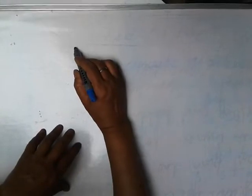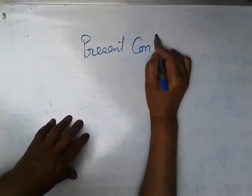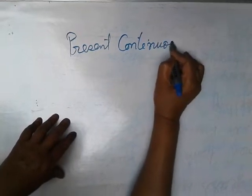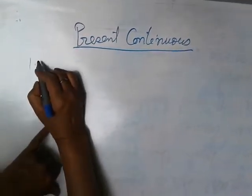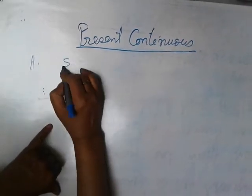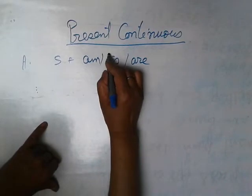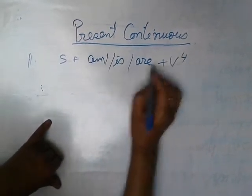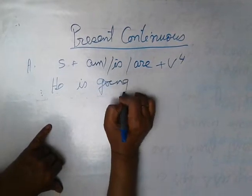Next is present continuous. As you know, the action is progressed at the time of speaking. The first structure of present continuous is subject, am/is/are plus V4. He is going. They are laughing.